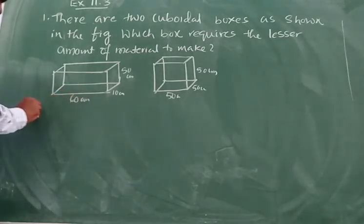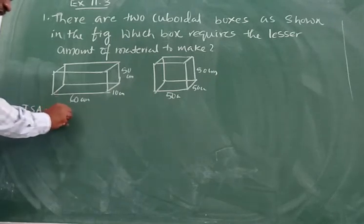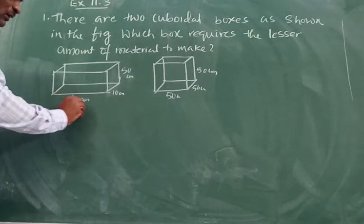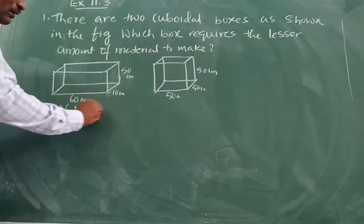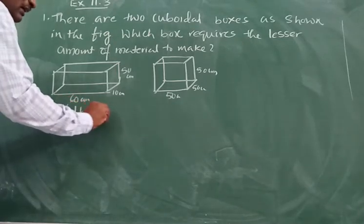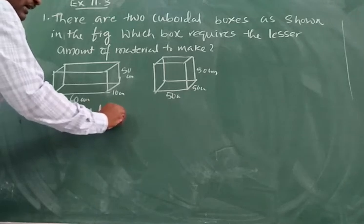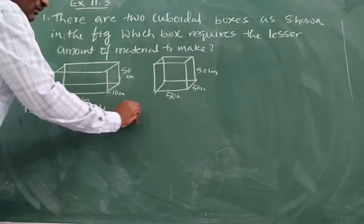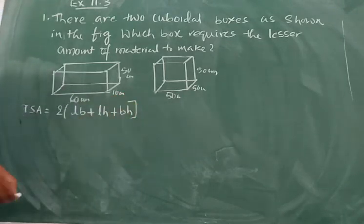So now total surface area, TSA. The formula to find out total surface area: 2 into L into B, plus LH, plus BH. Okay both are same.